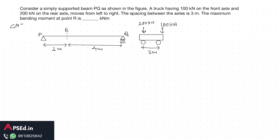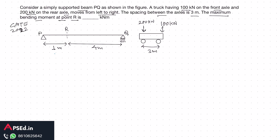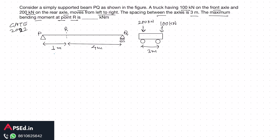Let's see this question from GATE 2022 forenoon session. It says: consider a simply supported beam PQ as shown in the figure. A truck having 100 kilonewton on the front axle and 200 kilonewton on the rear axle moves from left to right. The spacing between the axles is 3 meters. The maximum bending moment at point R is to be found.